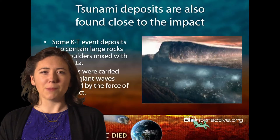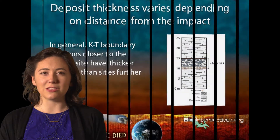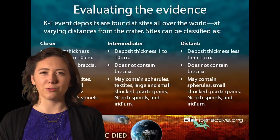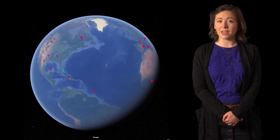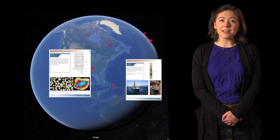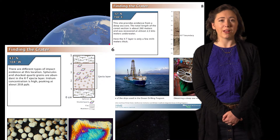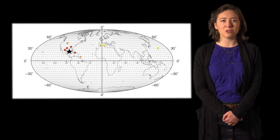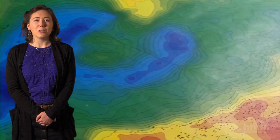The activity's PowerPoint gives students the tools they need to read the geologic record for clues. Students then travel the world to investigate 10 locations where they examine the KT boundary. Analyzing this evidence, students determine each site's relative distance from impact and use easy-to-interpret color coding to plot their data on a world map.